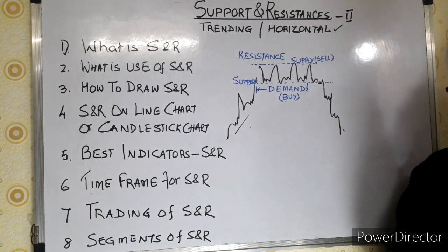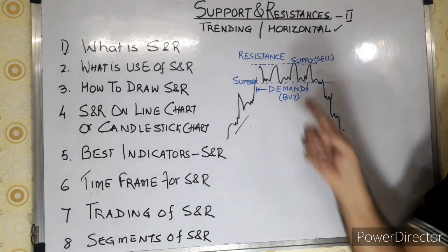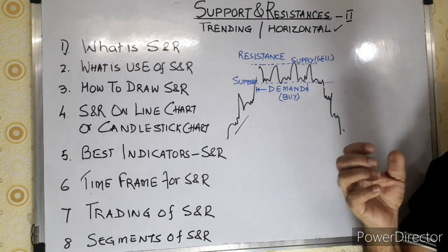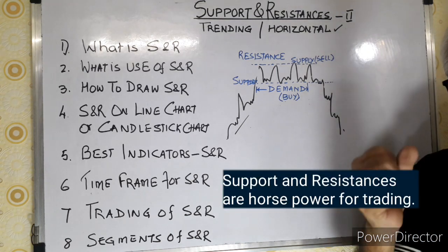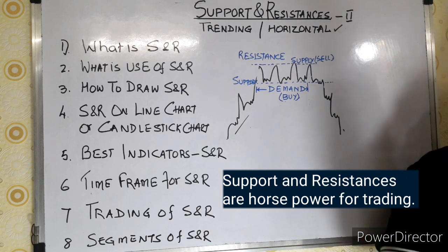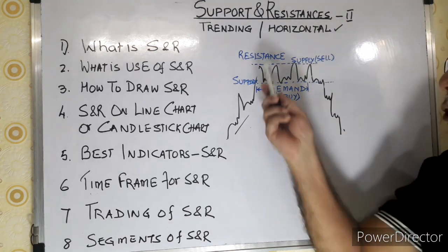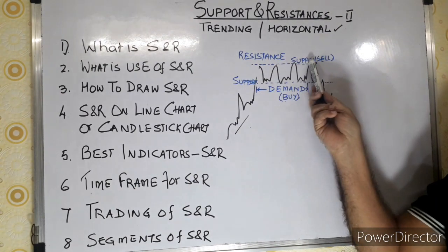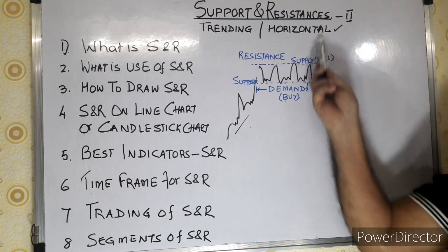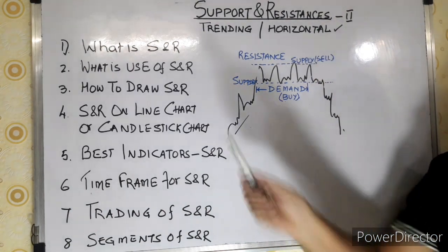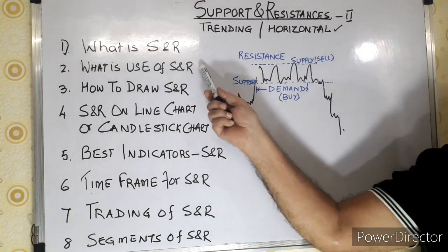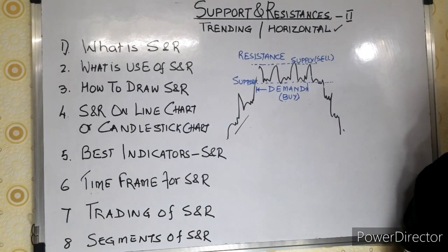Support and resistance is actually the horsepower of trading. The better you understand it, the more profits you will find, because at these levels there is either a pause, a trend reversal, or a breakout. The use of support and resistance is basically to identify whether the price is right to buy or to sell.